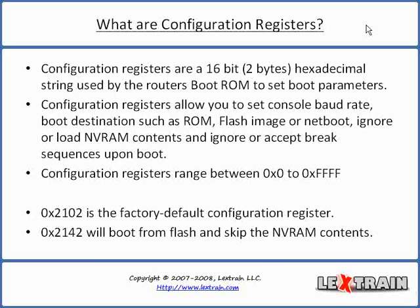Let's talk about configuration registers — what a configuration register is and what it does. The configuration register is a 16-bit, 2-byte hexadecimal string used by the router's boot ROM to set boot parameters, such as the console baud rate, the boot destination — including ROM monitor mode, the first available IOS image found in Flash, or NetBoot. It even allows you to configure the router to ignore the startup configuration, and you can also configure the router to ignore the break sequence, which will disable the password reset feature.